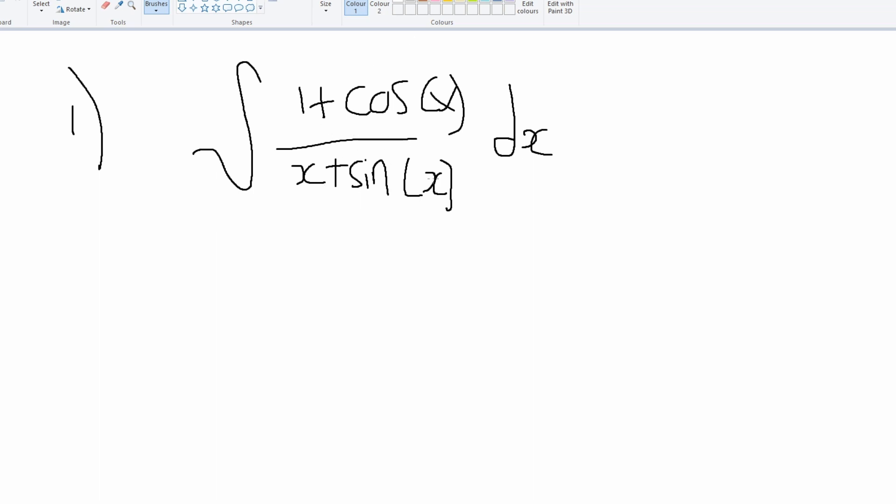And this is actually really simple. We can use integration by substitution to solve this. If we just let u equal x + sin(x), and then we differentiate that, we're just gonna get 1 + cos(x). After we get that, we can just do the inverse, so the reciprocal of that.